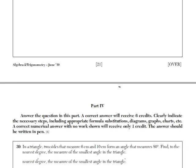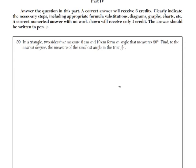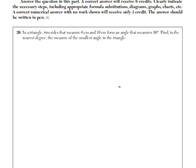Part four, six point question. One question worth all six points. So you really want to be careful here. In a triangle, two sides measure six and ten, form an angle that measures 80 degrees. So I have something like this. And their question is, what is the measure of the smallest angle in the triangle?